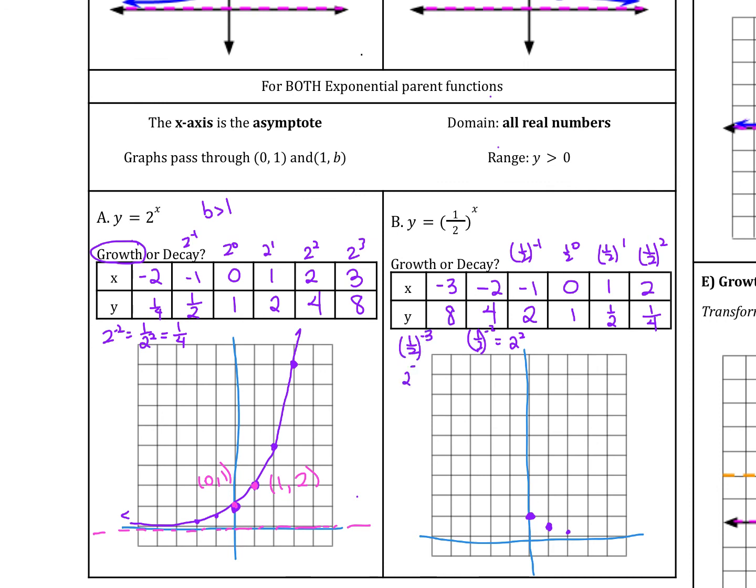And then if we did negative 3, that would be 8, right? The 1 half to the negative 3 it flips it so it becomes 2 to the third which is 8. So now we can graph it. So negative 1 up 2, negative 2 up to 4, and then negative 3 we're up to 8.